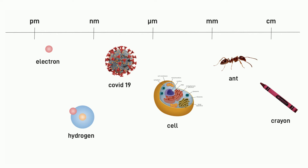All the way down close to the picometer level is an electron, and a little bit larger than that would be a full hydrogen atom. There you're creeping up on the nanometer — single digit nanometer readings.